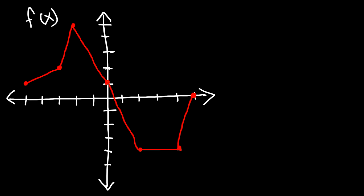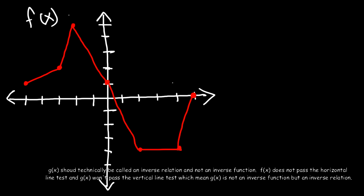Go ahead and graph the inverse function, which we'll call g of x. First let's plot the points of the line y equals x: one one, two two, three three, four four, zero zero, and so forth.